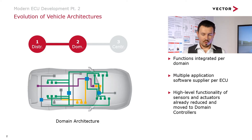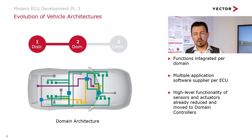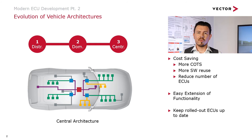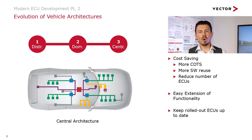The only drawback with domain architectures is that nowadays domains are really merging together. Consider a parking assist: it needs the brakes, the steering, the cameras, and the infotainment system — essentially functions from all domains. To address this problem, the third type of architecture was developed: the so-called central architectures. The idea is to have smart sensors in the vehicle, connected either directly or via IO nodes, with one, two, or three central computing units encompassing all the software.